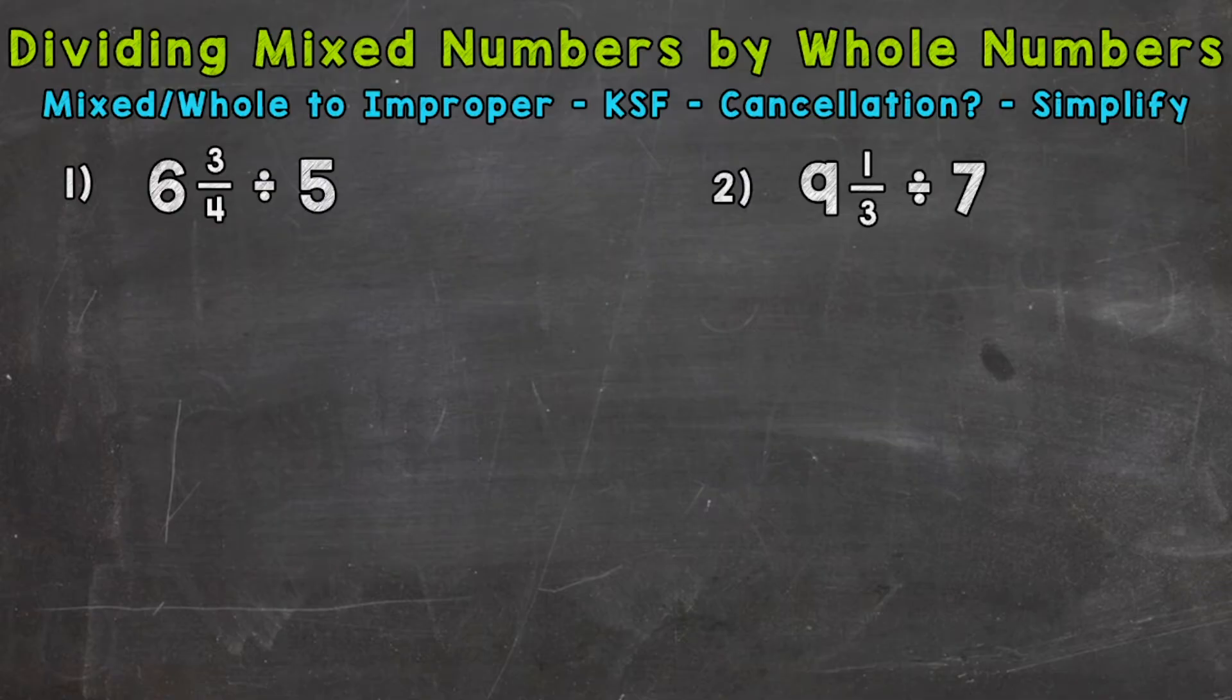So let's jump into number one, where we have 6 and 3 fourths divided by 5. Now, the first thing we want to do is change any mixed numbers or whole numbers to improper fractions. So fractional form, where we just have a numerator and a denominator.